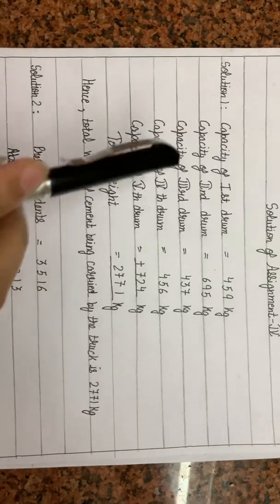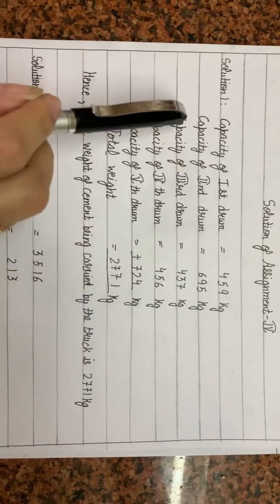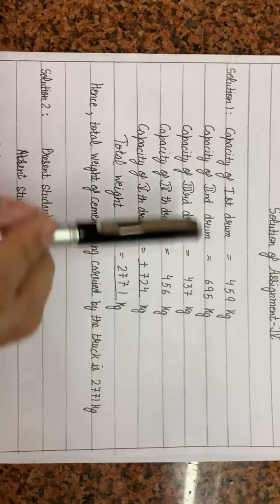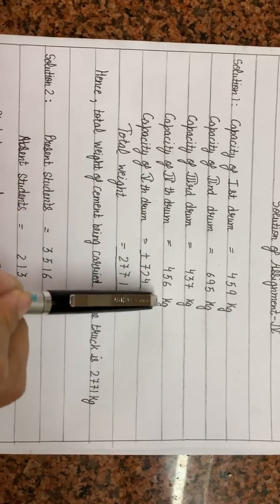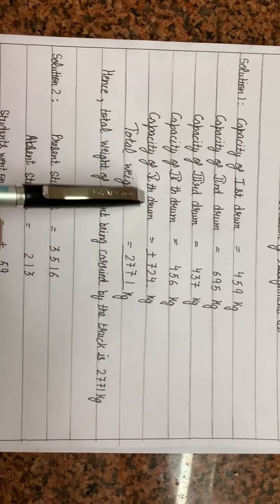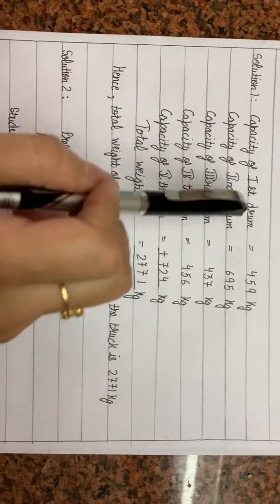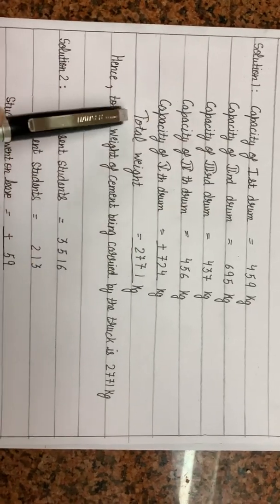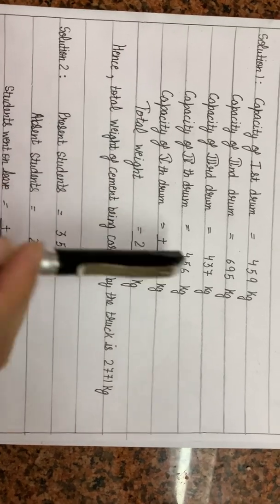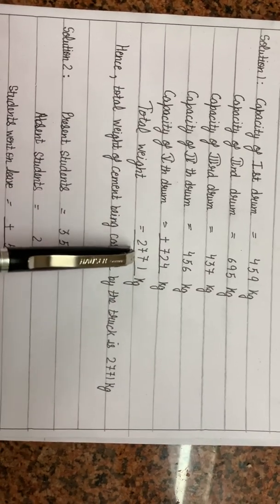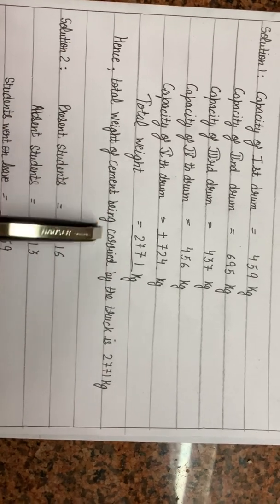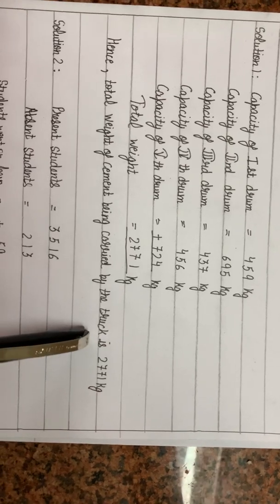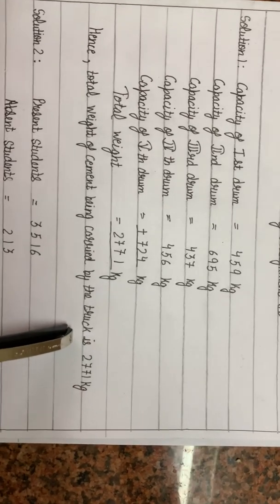Our first statement: capacity of first drum — 459 kg; capacity of second drum — 695 kg; capacity of third drum — 437 kg; capacity of fourth drum — 456 kg; and lastly the capacity of fifth drum — 724 kg. These are your statements. Now we have to find the total weight, so total weight is equal to the sum of all of these, which comes out to be 2771 kg. Hence total weight of cement being carried by the truck is 2771 kg. I hope question number 1 is clear to you.